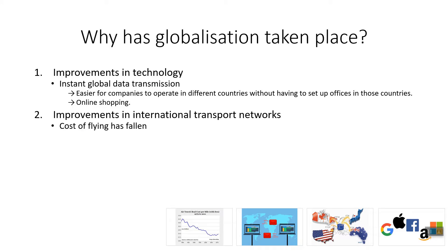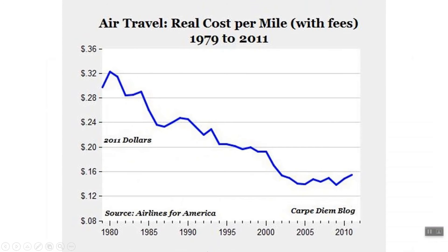Secondly, improvements in international transport networks. Over time, as airplanes have become more efficient, the cost of flying has fallen. As you can see with this graph, the real cost per mile of air travel from 1979 to 2011 has nearly halved. This has encouraged globalization as it has made it easier and cheaper for companies to set up operations overseas — it's now cheaper and quicker for managers to fly abroad to manage operations in different countries.